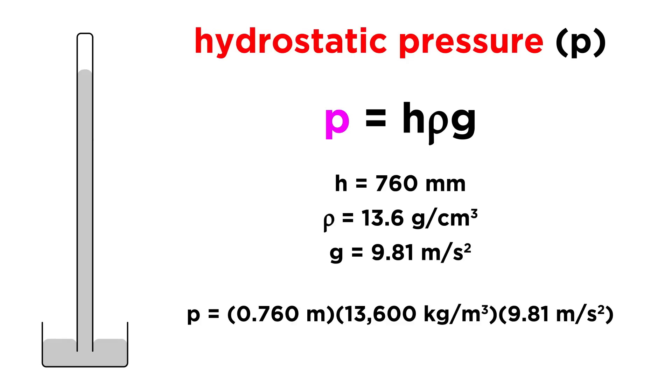We will want all our units to agree, so we can plug in the height of the column and convert to meters, then the density converting to kilograms per cubic meter, and then the gravitational acceleration, which, as we said, is in meters over seconds squared.